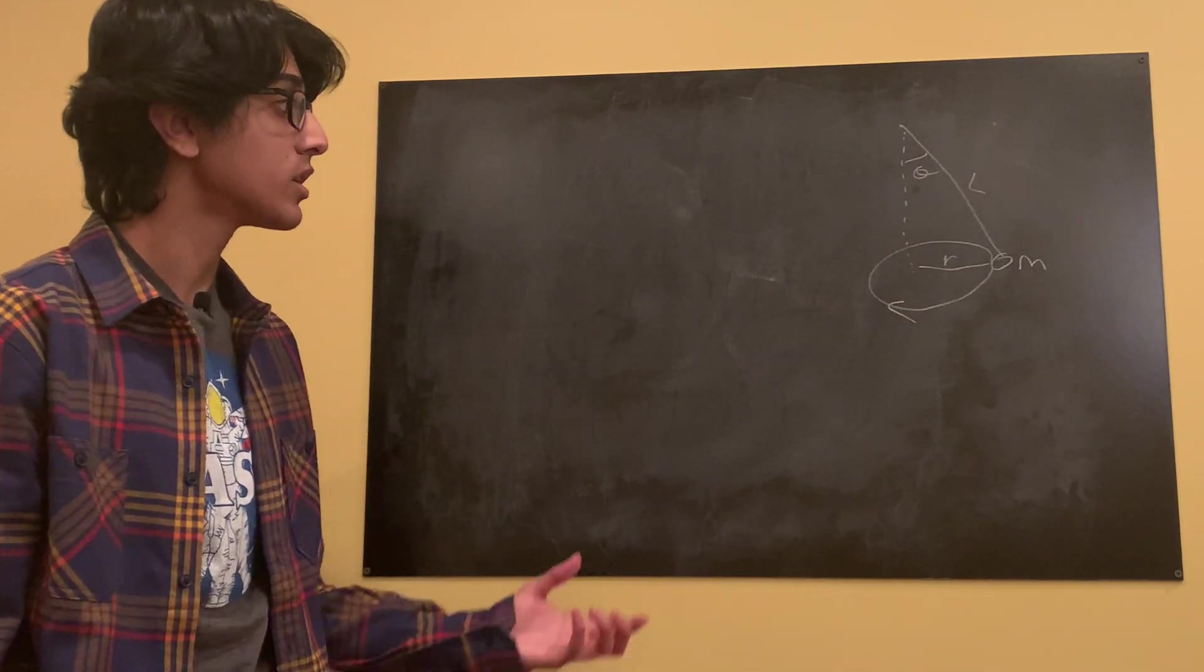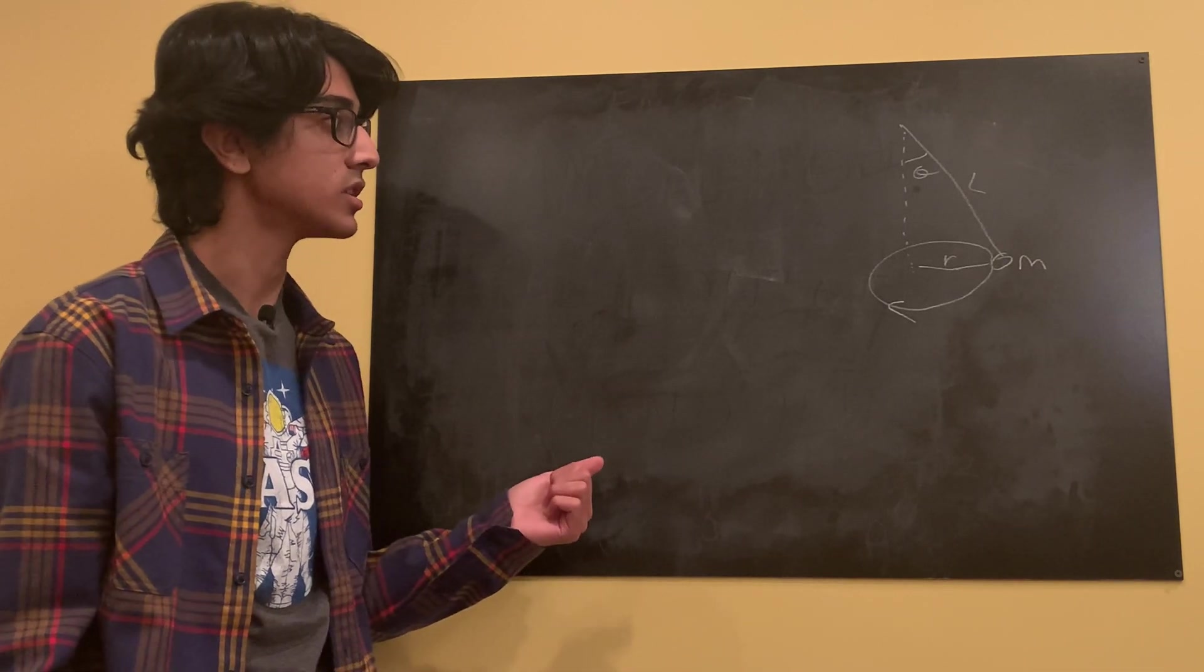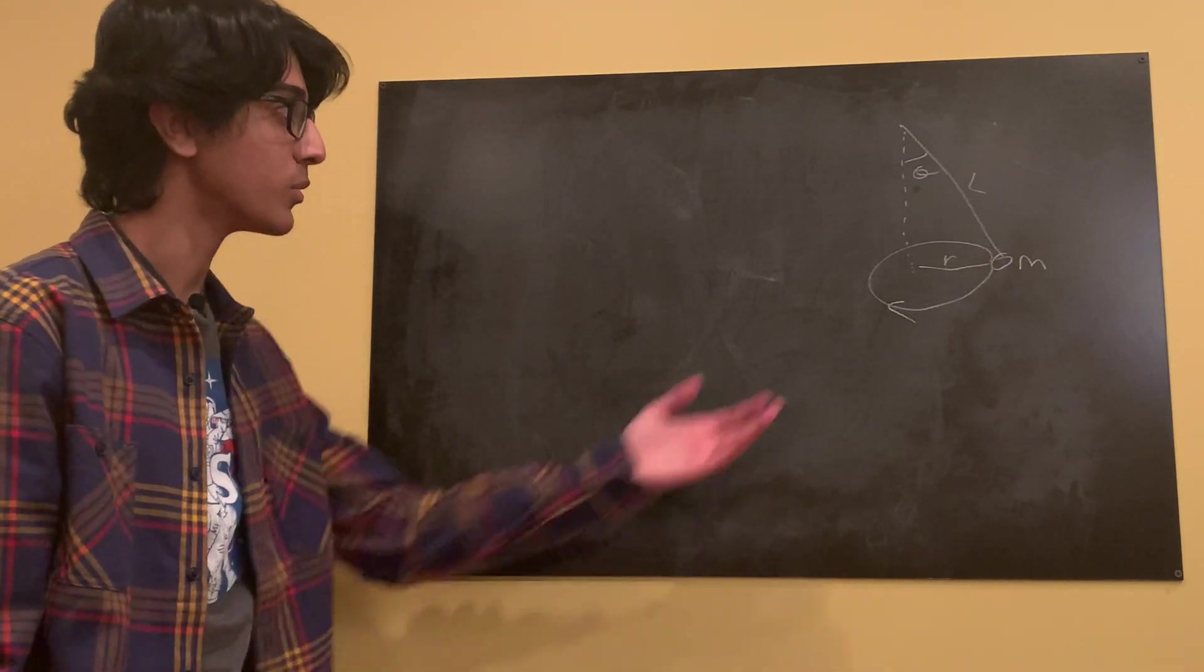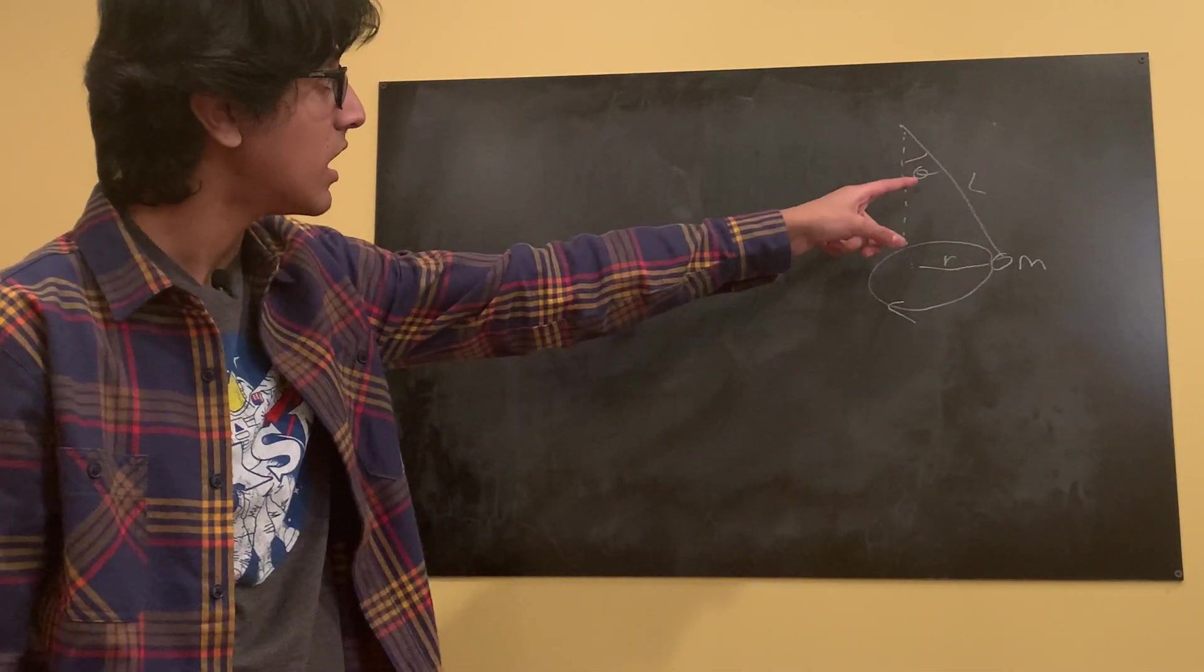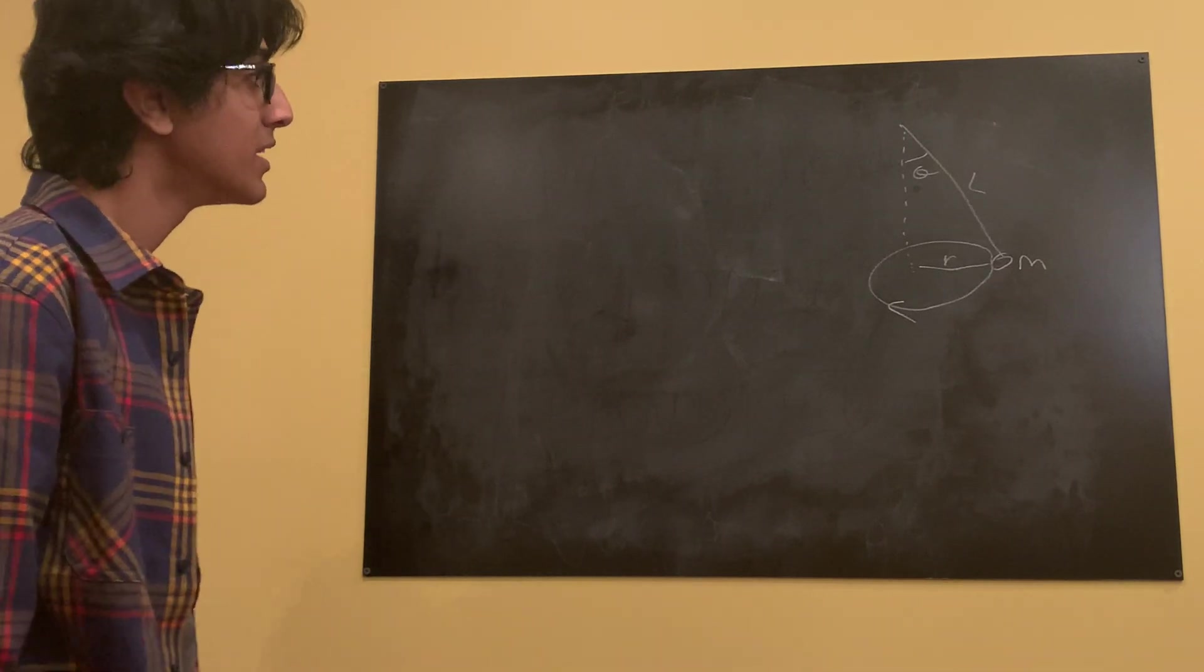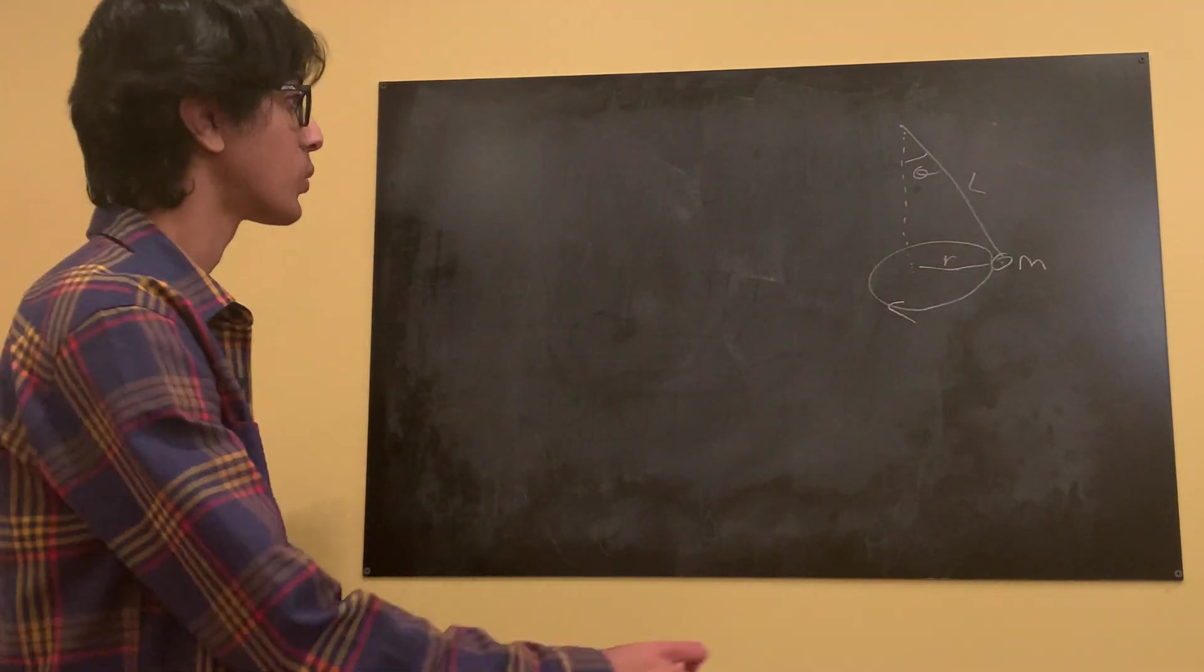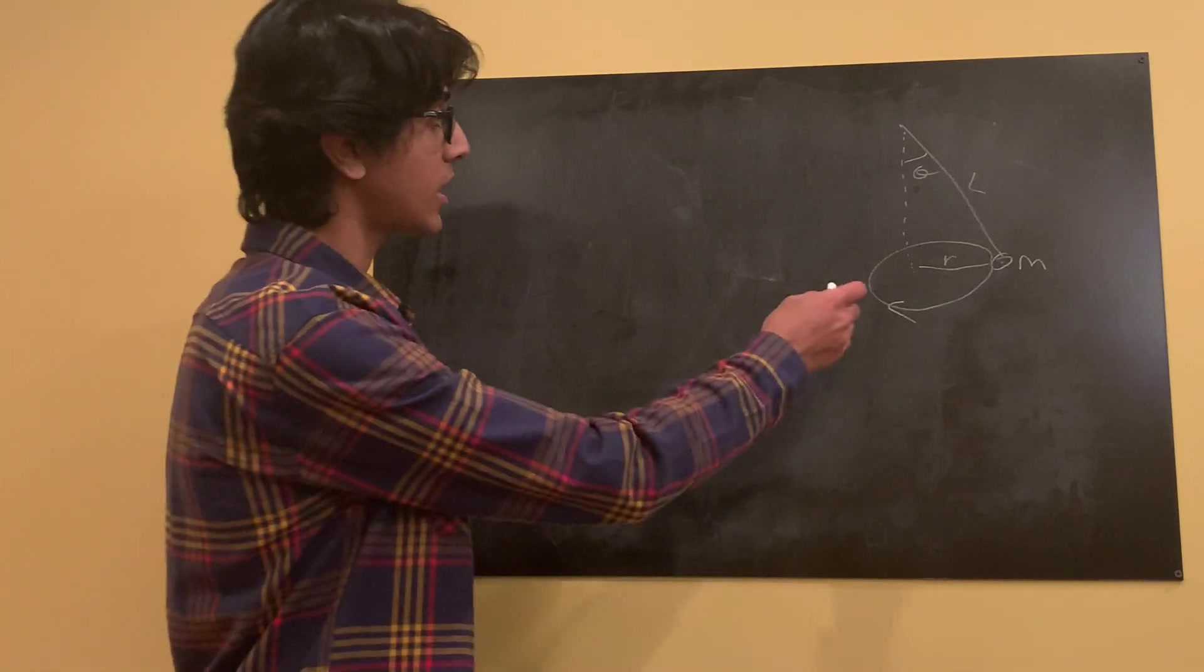And actually, one of these variables cancels out and actually is not important in our problem. So you can take a quick guess for yourself if you want to see which one of these variables actually is not important for finding this theta. And see if you're right at the end. So we're going to start with a force analysis for this object with a mass M that's swinging around its conical pendulum.